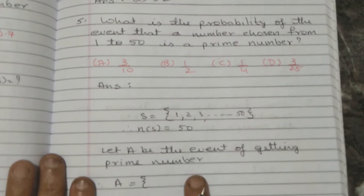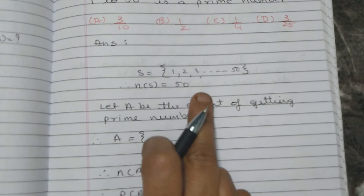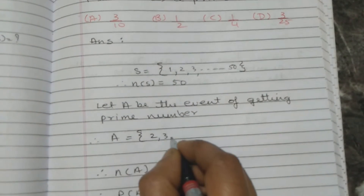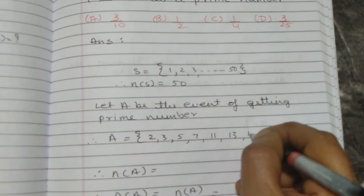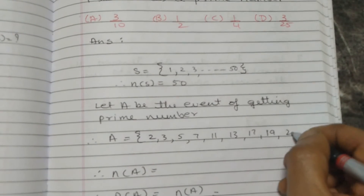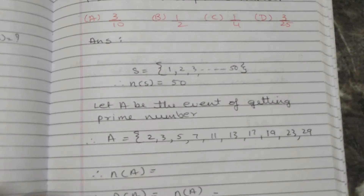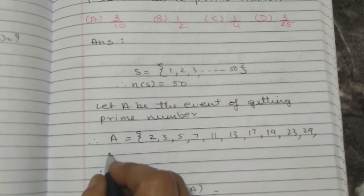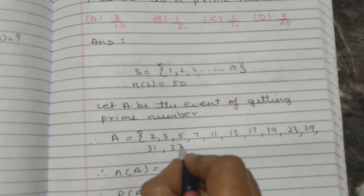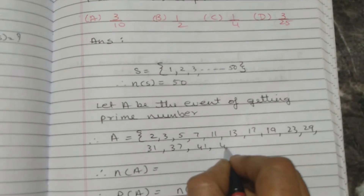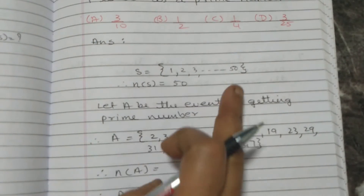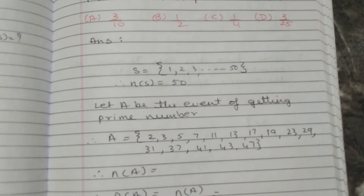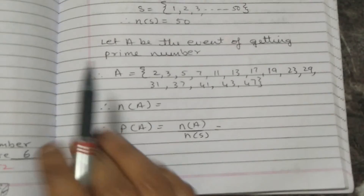Let A be the event of getting prime numbers. Prime numbers from 1 to 50 are: 2, 3, 5, 7, 11, 13, 17, 19, 23, 29, 31, 37, 41, 43, 47. Counting these: 1, 2, 3, 4, 5, 6, 7, 8, 9, 10, 11, 12, 13, 14, 15. So NA equals 15.